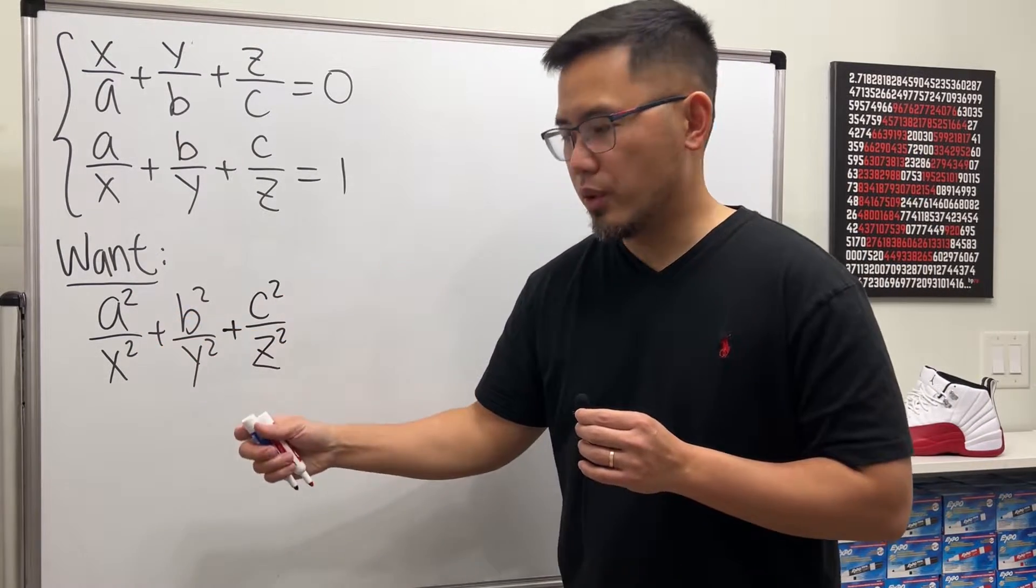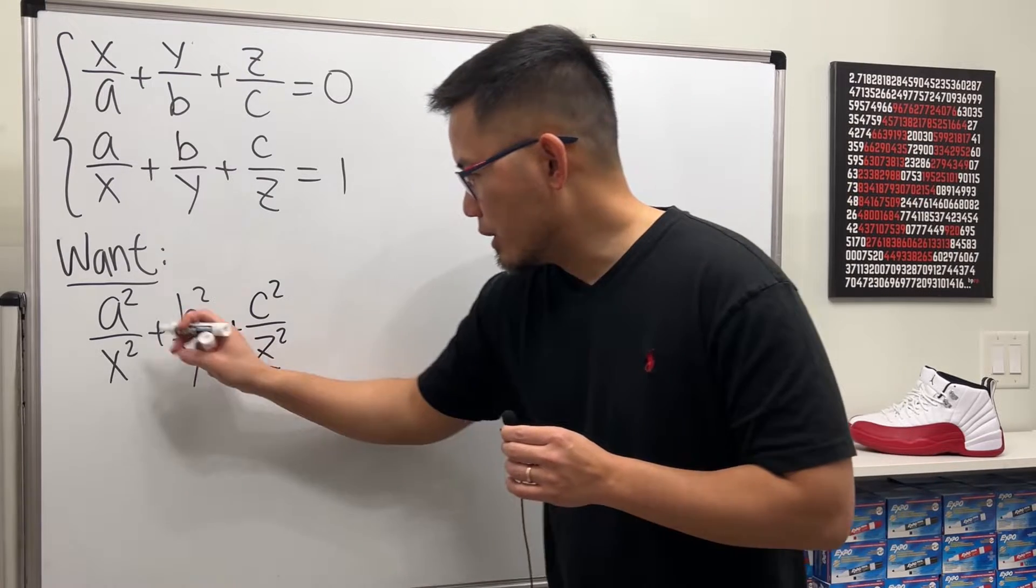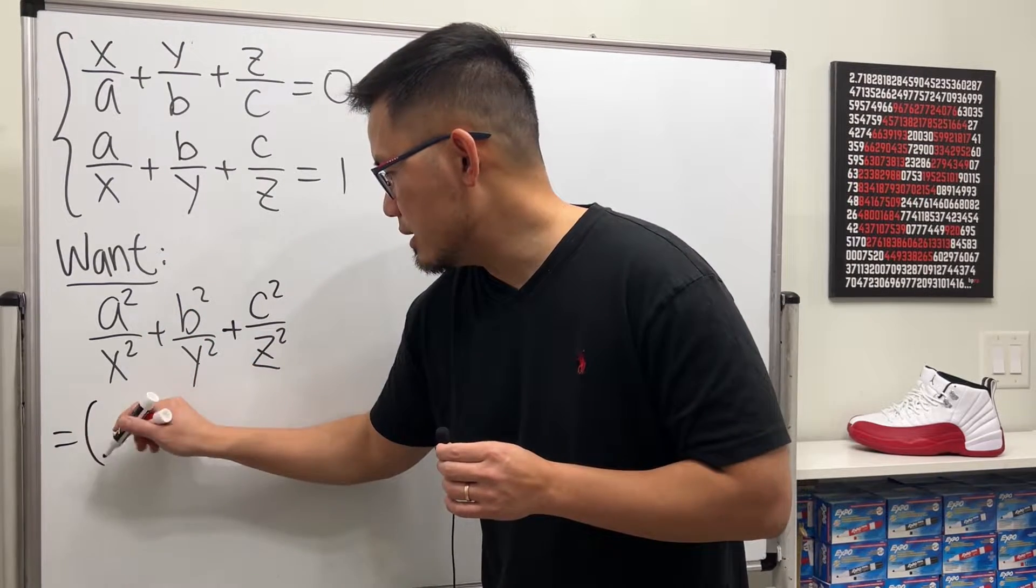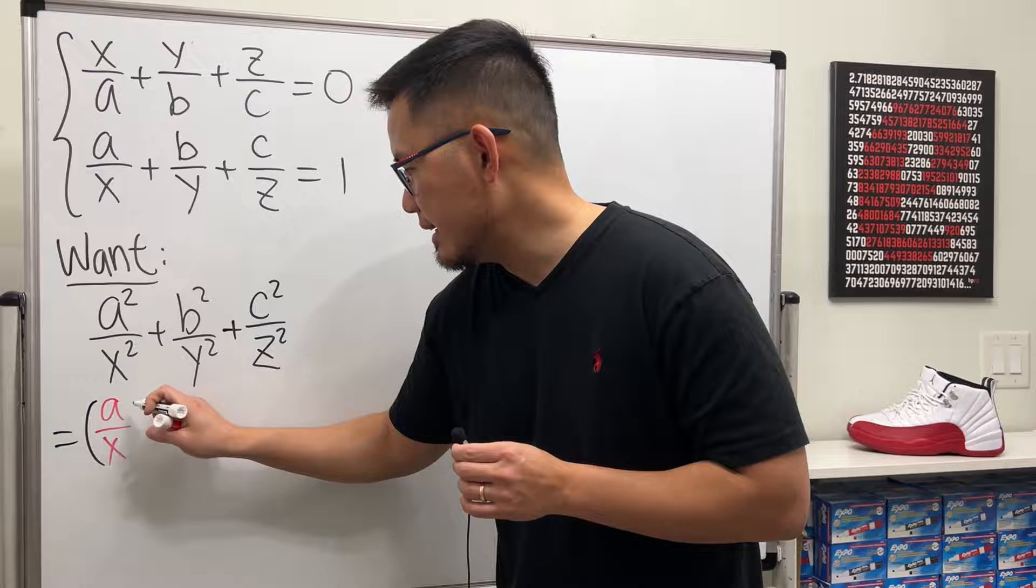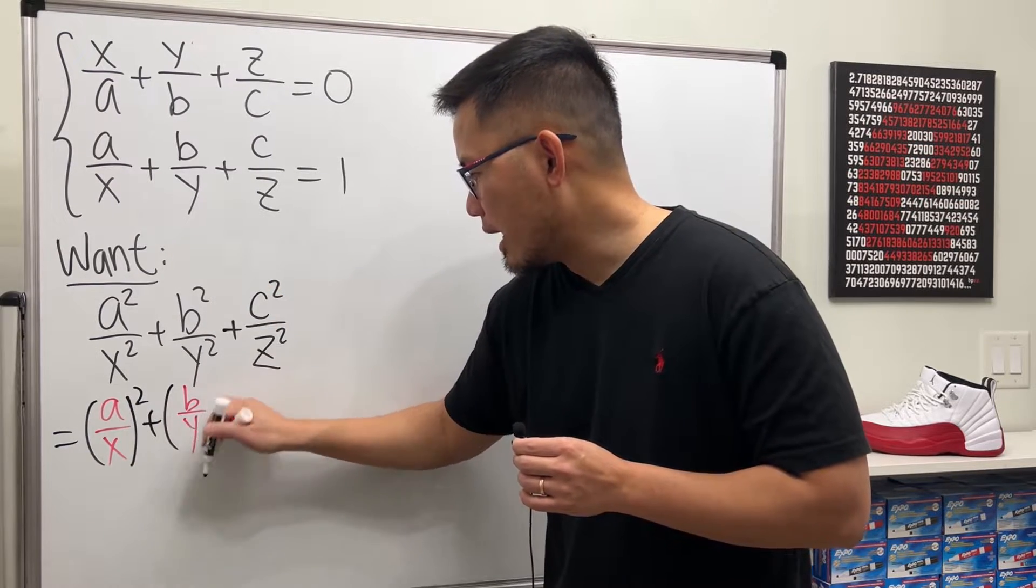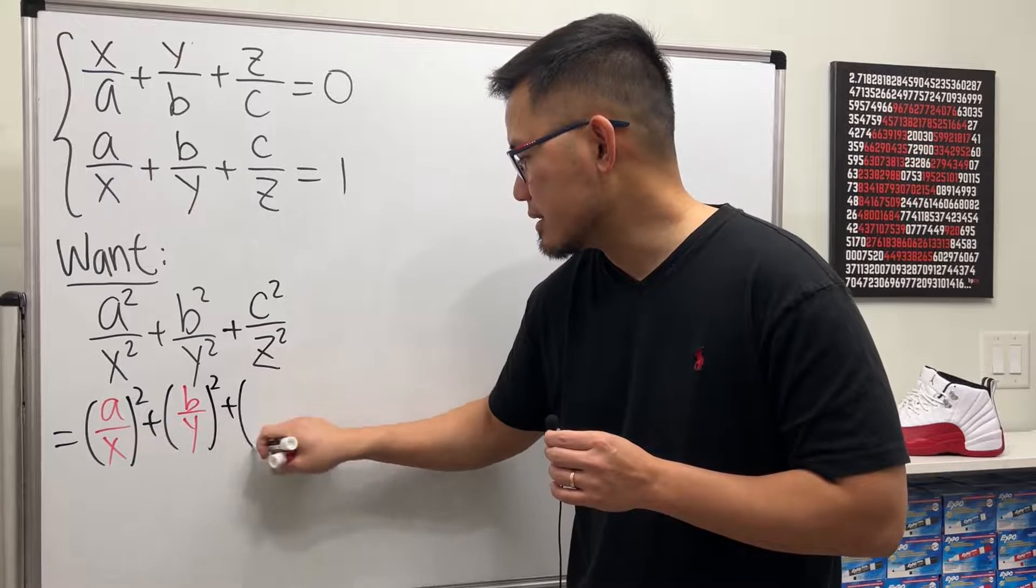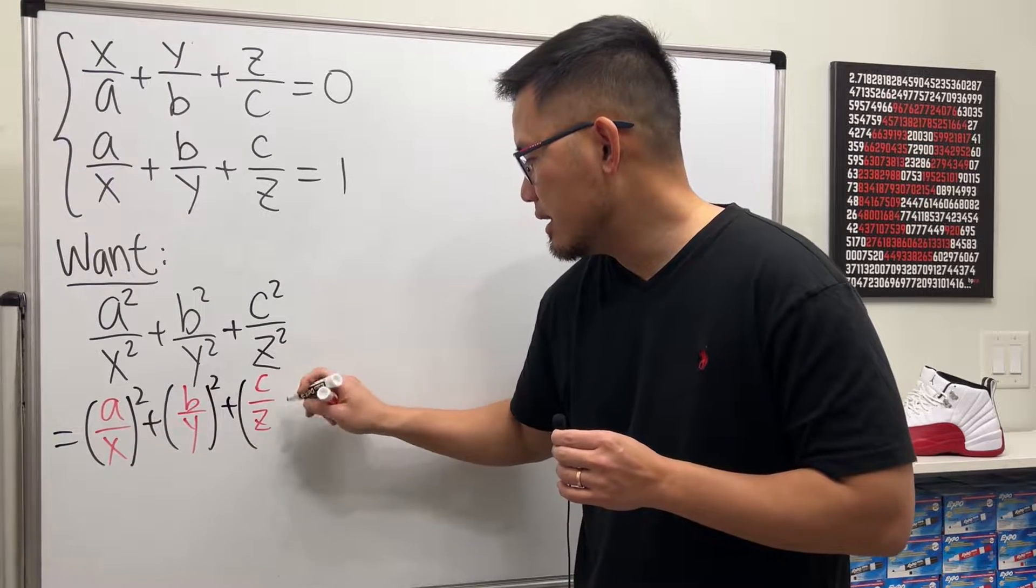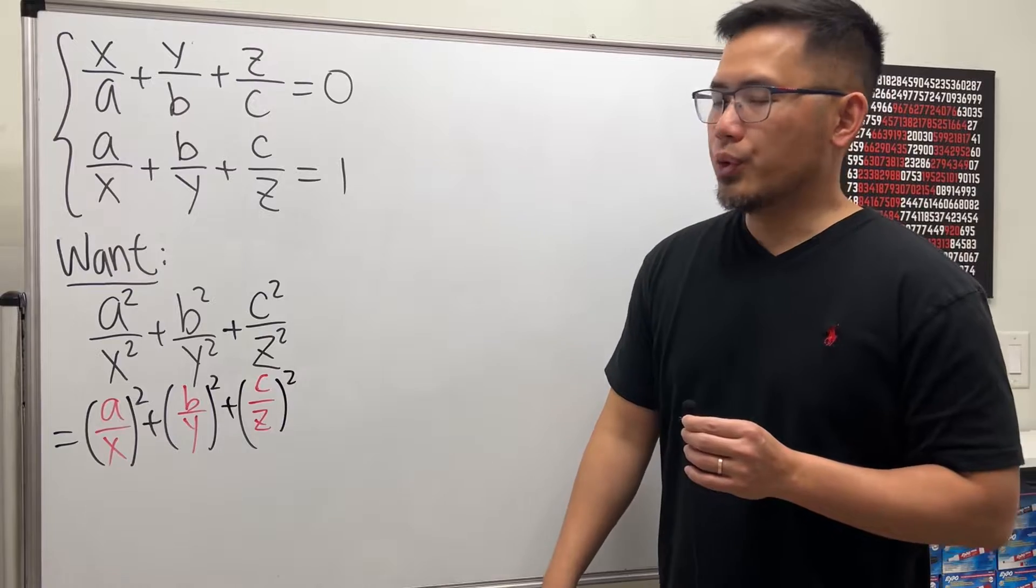Both of them have squares. So we can look at this as parentheses with a over x inside and then squared, and then this right here, same thing, b over y squared, and then lastly, c over z squared. Cool.